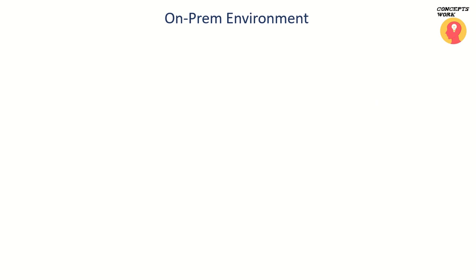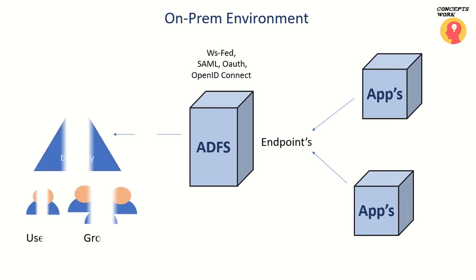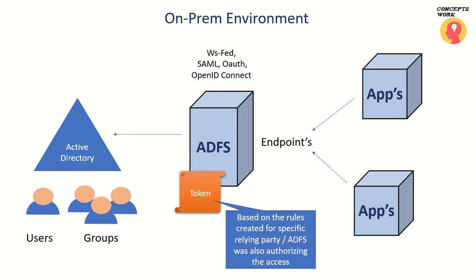Before we move on, let's have a quick recap of how things worked in our ADFS environment. In our on-prem environment, apps were contacting certain endpoints of our ADFS servers depending on the protocol they were using. ADFS verified credentials and sent a respective token to the applications. But before the token was sent, something was done by ADFS — and that is conditional access.